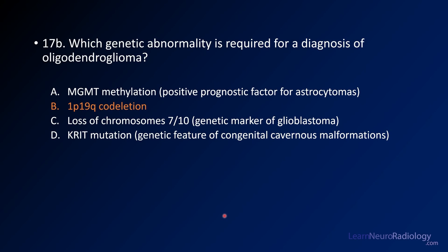The genetic abnormality associated with oligodendroglioma is the 1p19q codeletion plus an IDH mutation — you must have both. MGMT is a DNA repair enzyme; when methylated it doesn't work as well, so MGMT-methylated tumors respond better to radiation, which works via DNA damage. Loss of chromosomes 7 and 10 are genetic markers of glioblastoma.